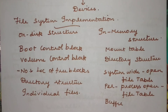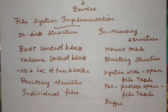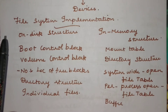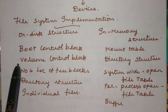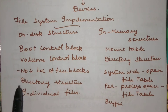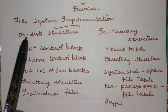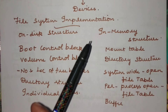In this video we will discuss file system implementation. In file system implementation, we have two specific structures: the on-disk structure and the in-memory structure. The on-disk structure consists of different kinds of information such as the boot control block, volume control block, number and location of free blocks, directory structure, and individual files. On-disk refers to secondary storage, while in-memory refers to RAM, which is primary storage.